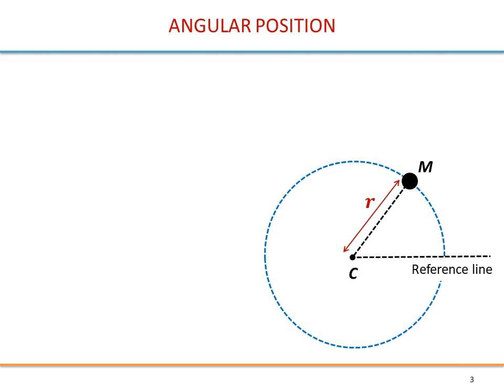How to characterize circular motion? We have here a point, we call it M, a mobile point, and it is experiencing a circular motion. So we define a reference line here. The circular motion is about center C, and M is at distance R, so R is a constant. When M moves from an initial position, it has moved by distance S, so this is a linear variable.